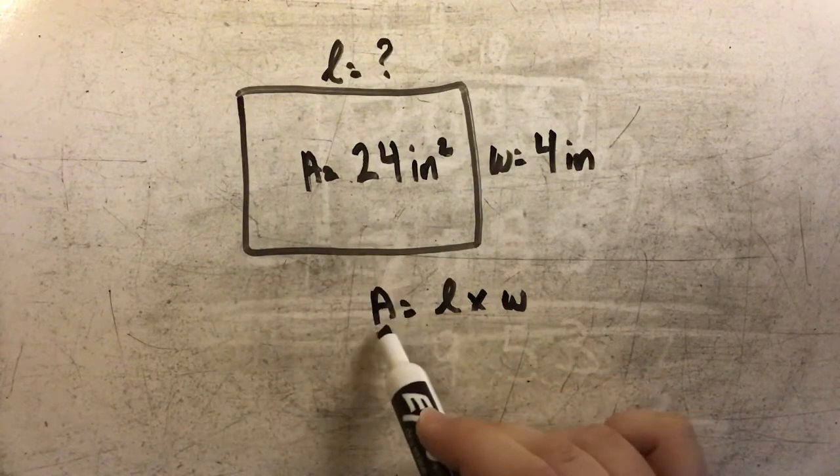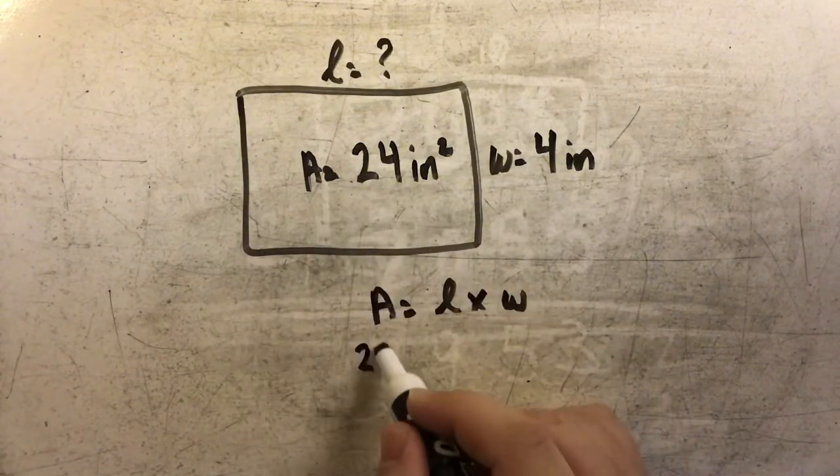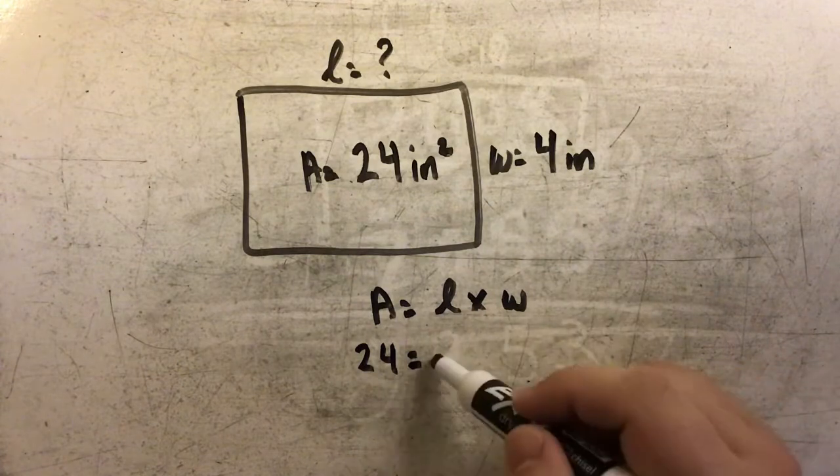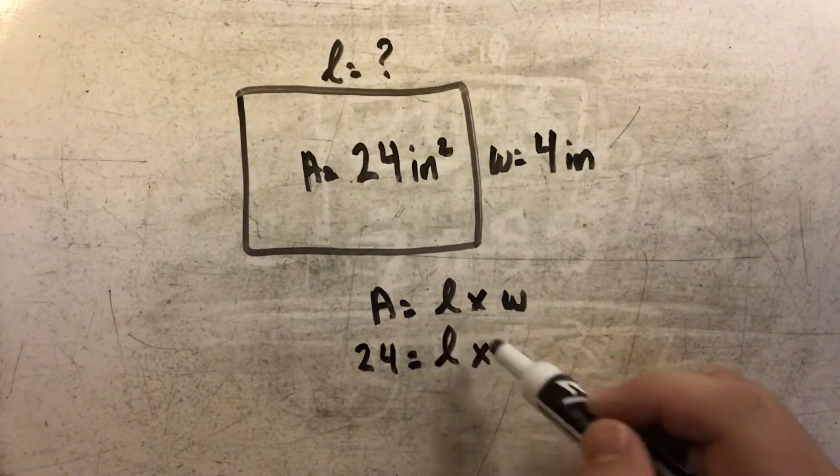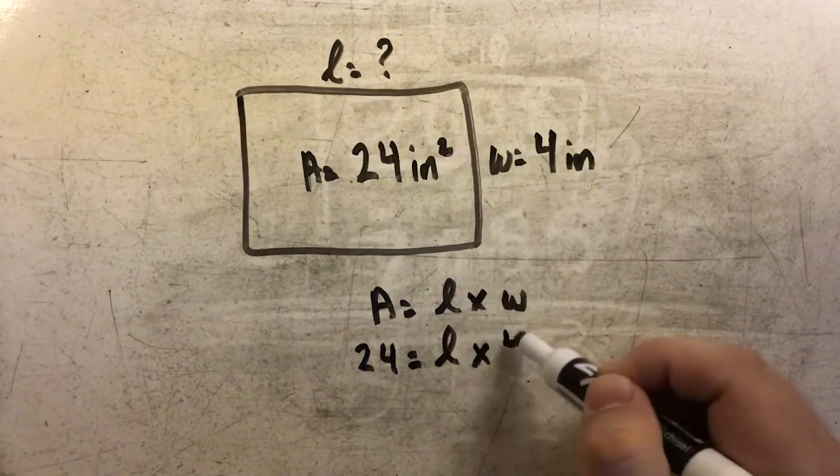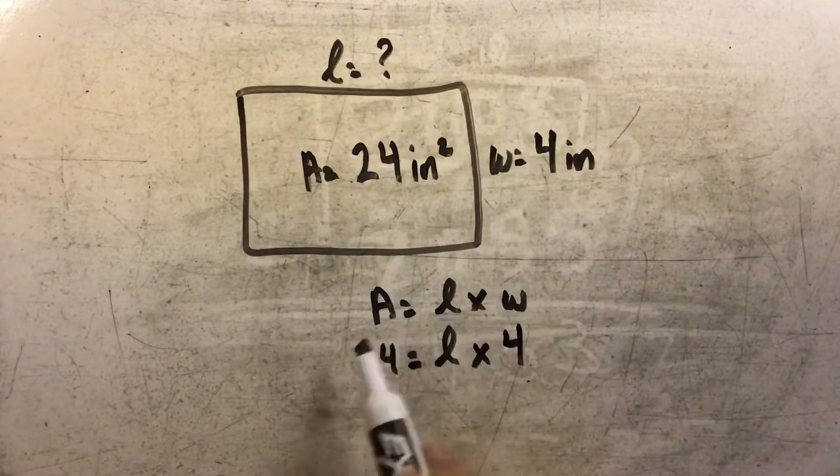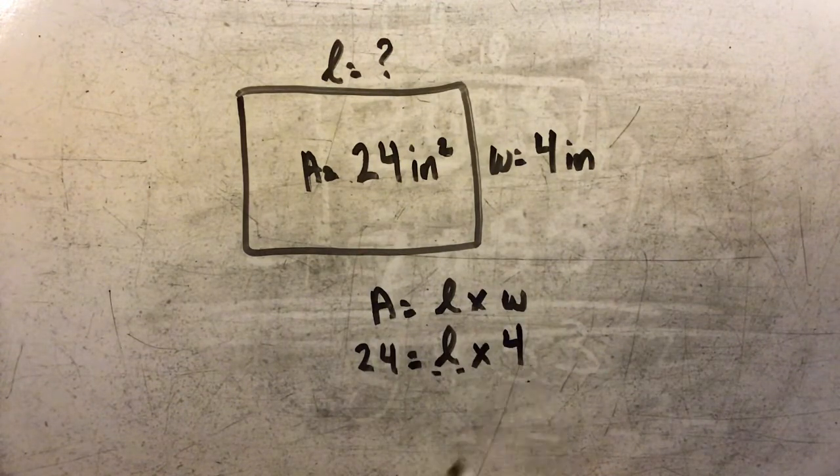Instead of finding the area, I now have the area, which is 24. I don't know the length yet, but I know the width is 4. So I have 24 equals length times 4.